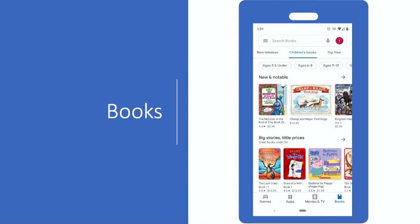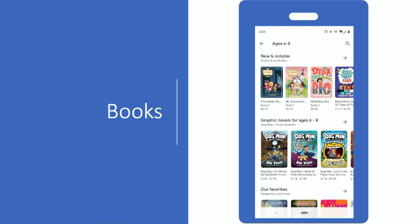In the Books section, you can find children's books and filter them by kid's age. And that is how you can find family-friendly content on Google Play.